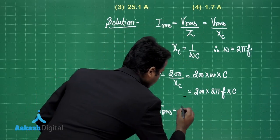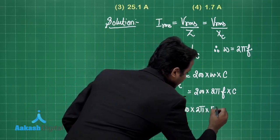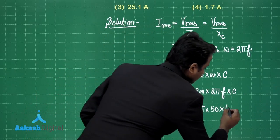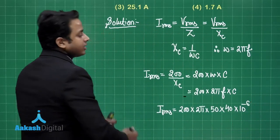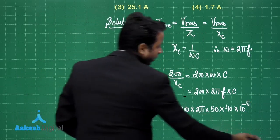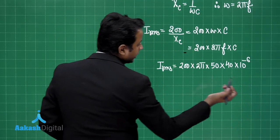RMS value of current is equal to 200 into 2 pi frequency is 50 hertz and capacitance is 40 microfarad. So, 10 raise to the power minus 6 factor will also be there. Now, rest remains is to solve this expression. So, simply what can I do?